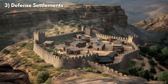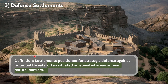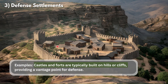Now we are going to look at our third settlement, which is a defense settlement. We can see that this settlement is found on the top of a mountain. Obviously, if you have an enemy trying to attack you, you can have enough time to spot them and come up with a plan to protect your people and your settlements. Defense settlements are settlements positioned for strategic defense against potential threats, often situated in elevated areas or near natural barriers. Examples include castles and forts, which are typically built on hills or cliffs, providing a vantage point for defense.